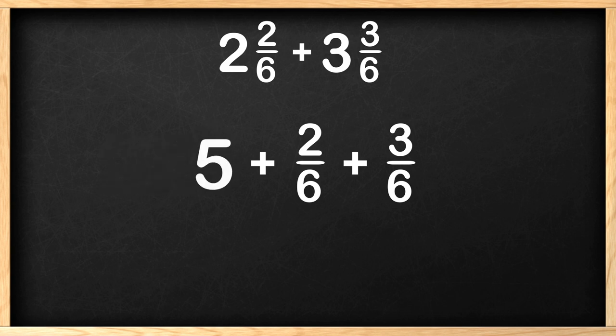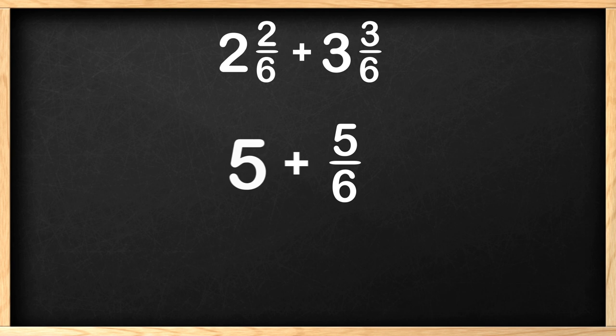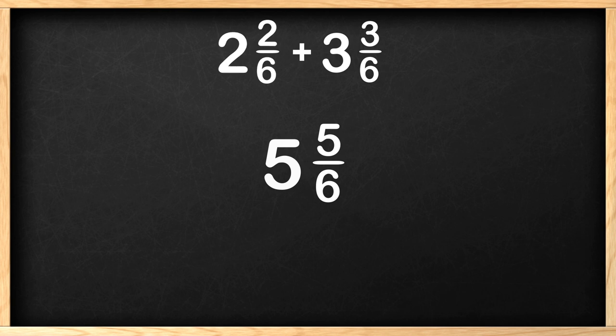Now we add the fractions which have the same denominator so we are good to start. Let's add the numerators of the fractions. 2 plus 3 is 5 all over 6. 5 plus 5 sixths is 5 and 5 sixths. We are done and have our answer. 2 and 2 sixths plus 3 and 3 sixths is 5 and 5 sixths.